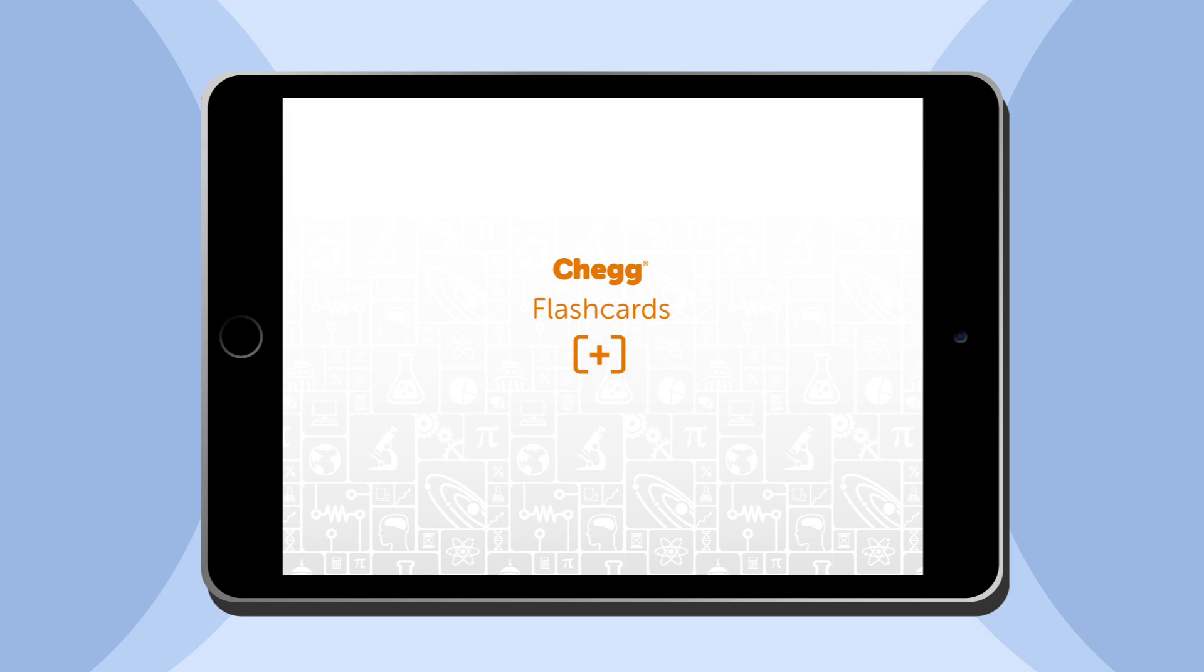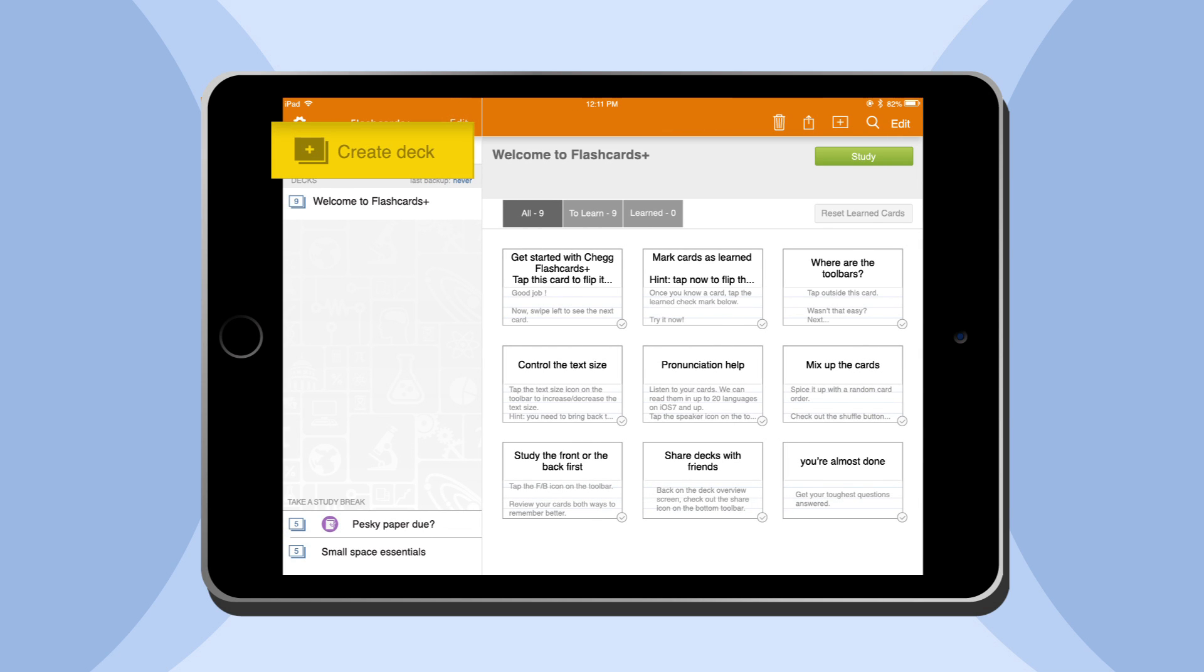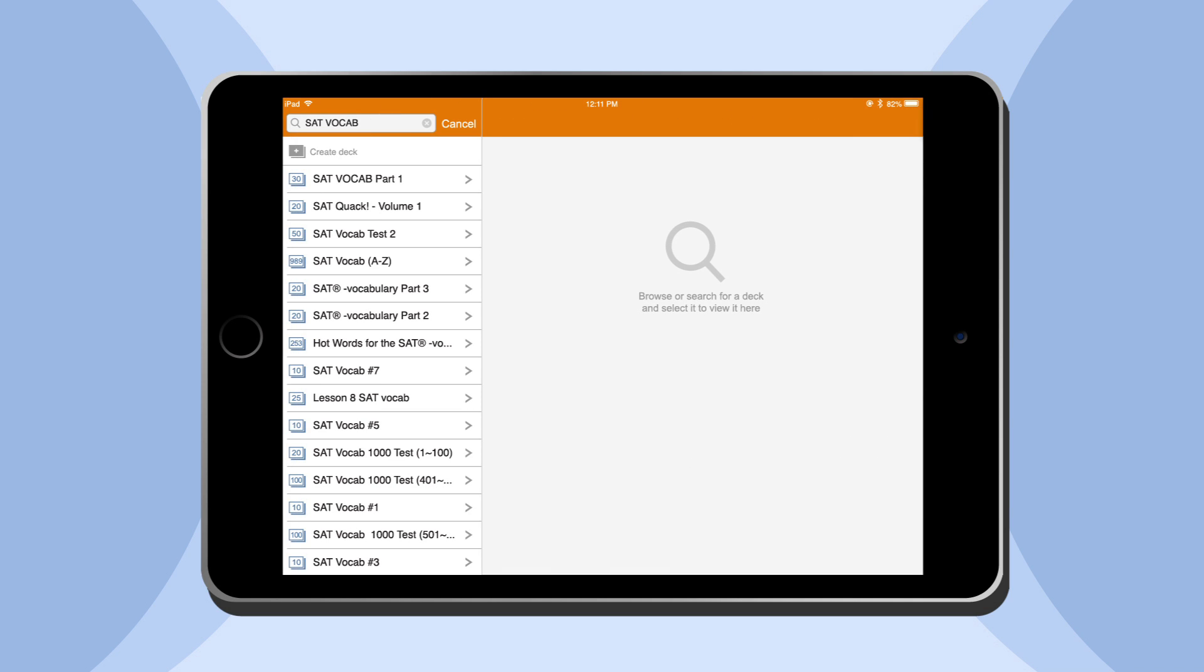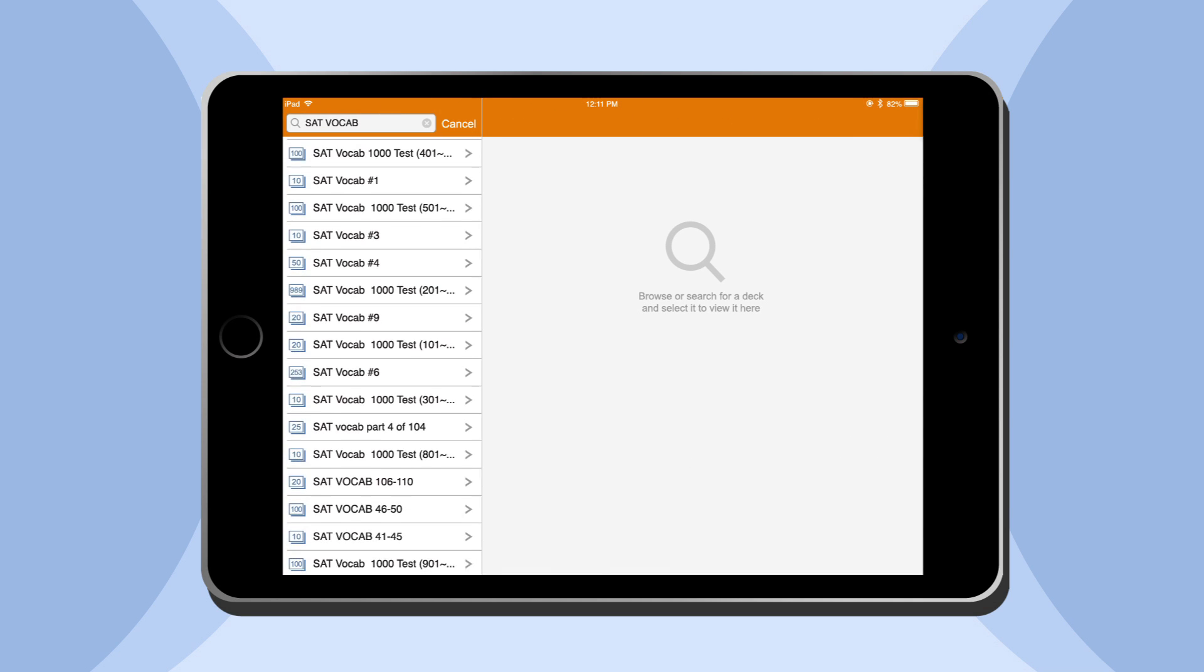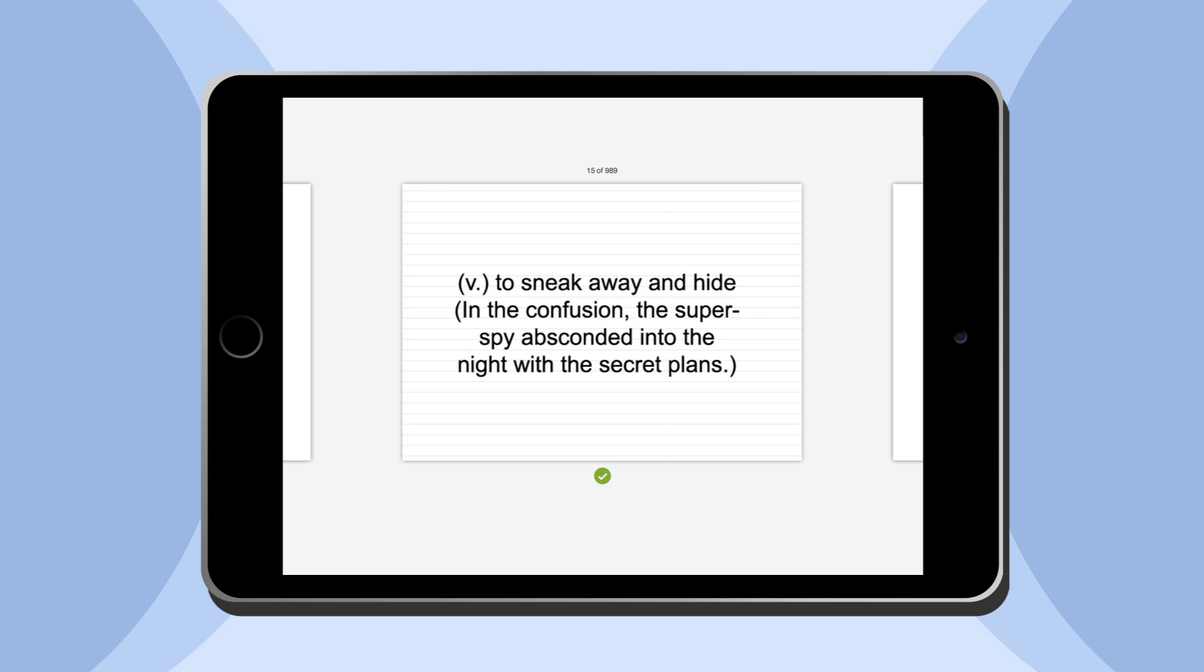You can learn hundreds of new words like prescience using flashcards. CHAG actually has a great flashcard app called Flashcards Plus that you can download and use from the App Store. You can create your own deck of vocabulary words or use one of the hundreds of decks that students like you have already created.